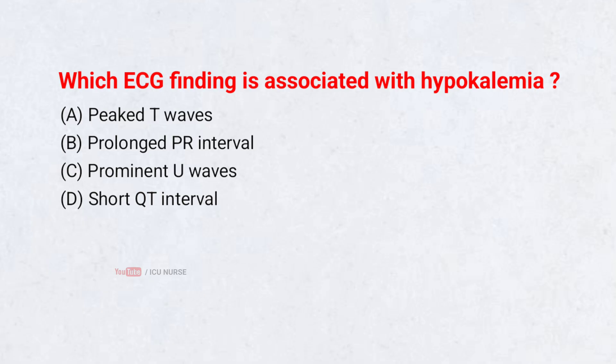Which ECG finding is associated with hypokalemia? A. Peaked T-waves, B. Prolonged PR interval, C. Prominent U-waves, D. Short QT interval. Correct answer: C. Prominent U-waves.